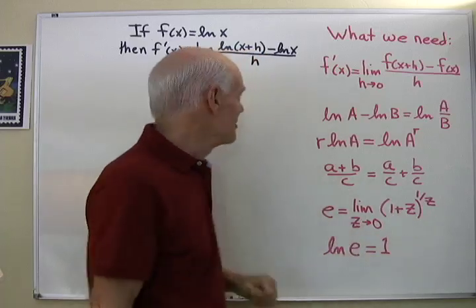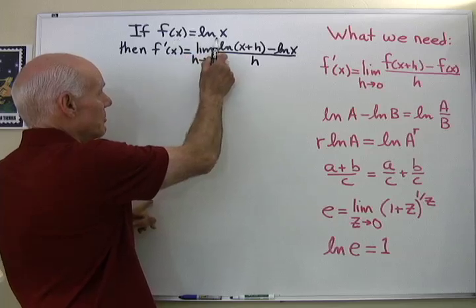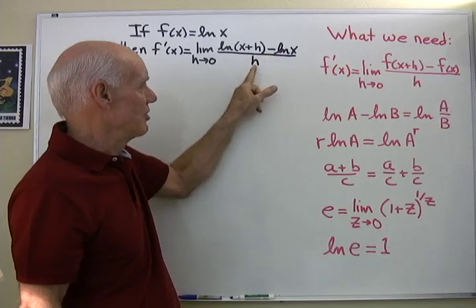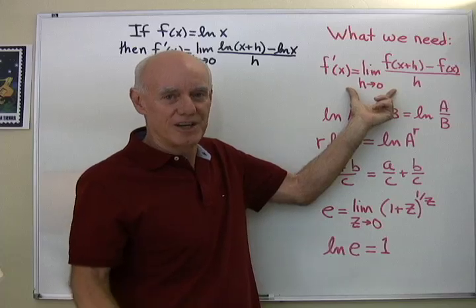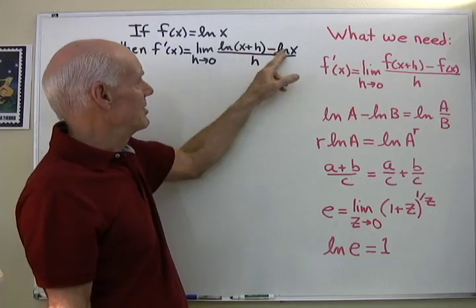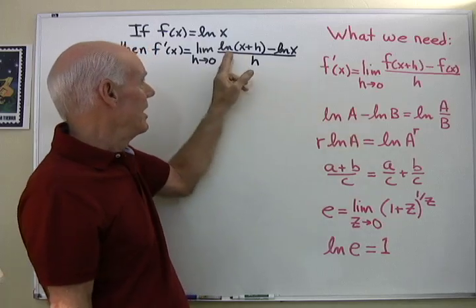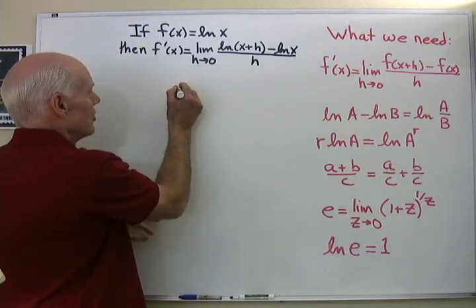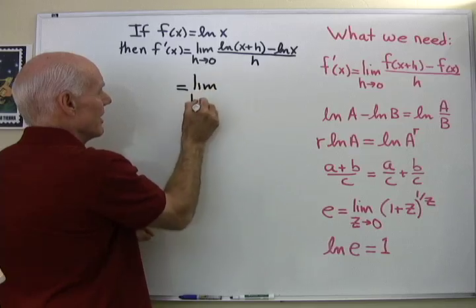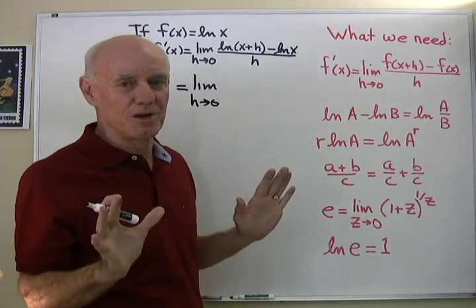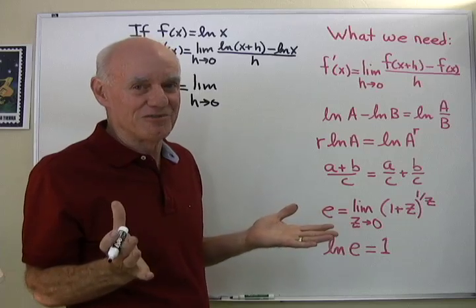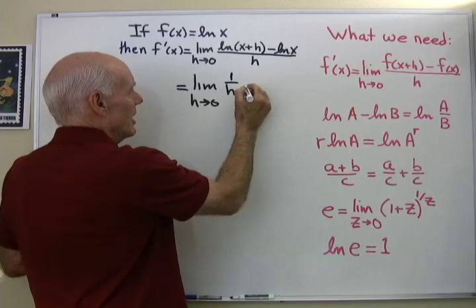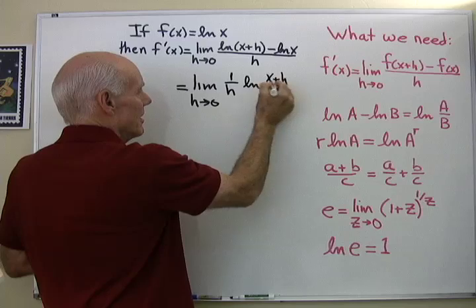Starting the derivation: if f(x) = ln(x), then f′(x) = lim(h→0) of [ln(x+h) − ln(x)] / h. Applying the logarithm difference property, ln(x+h) − ln(x) = ln((x+h)/x). Dividing by h is the same as multiplying by 1/h, so we have lim(h→0) of (1/h) · ln((x+h)/x).